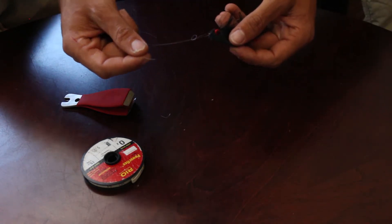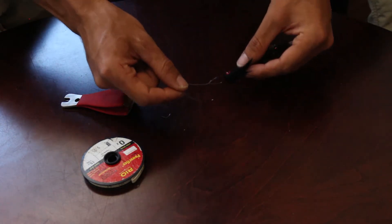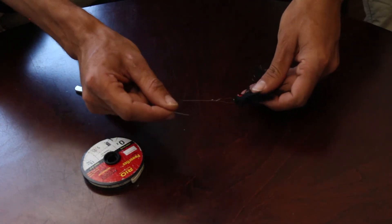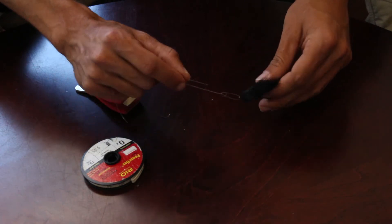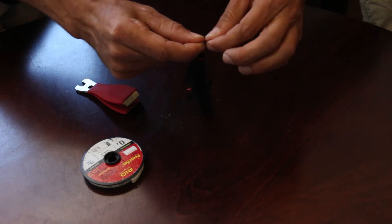We're left with this. Now what we need to do is take this tag end that we have right here, take that tag end, and feed it back through this little loop like so. Grab it.